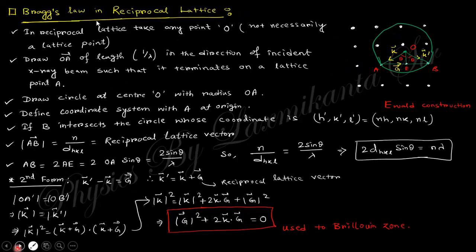Next is Bragg's law in reciprocal lattice, that is the vector form. The vector form of Bragg's law in reciprocal lattice will be k' - k = g, where g is the reciprocal lattice vector. Taking OA and OB prime the same, you obtain this form, which is the vector form of Bragg's law in reciprocal lattice.